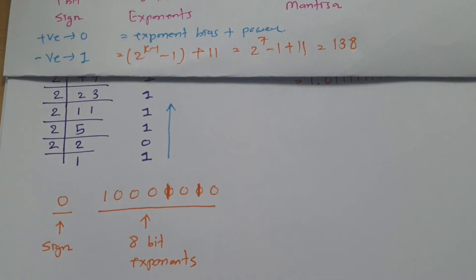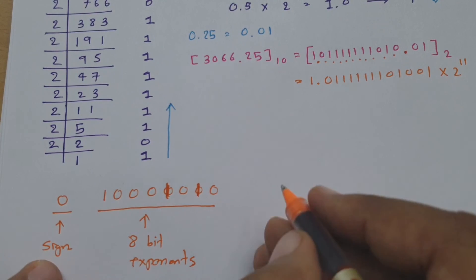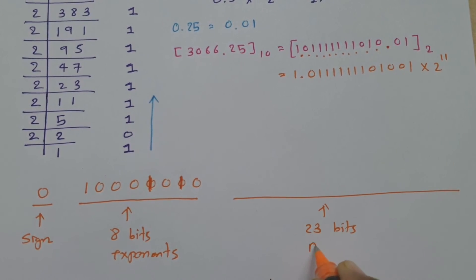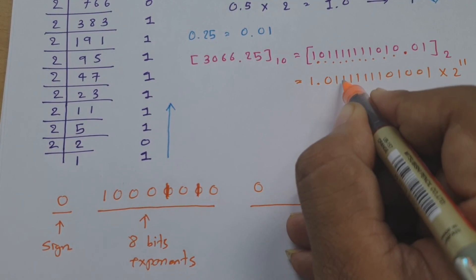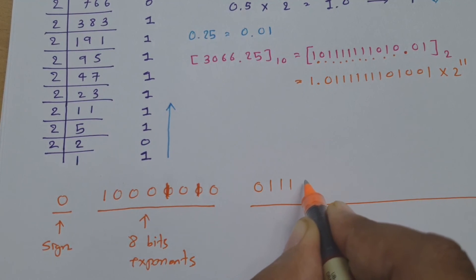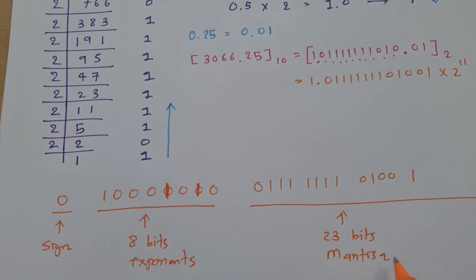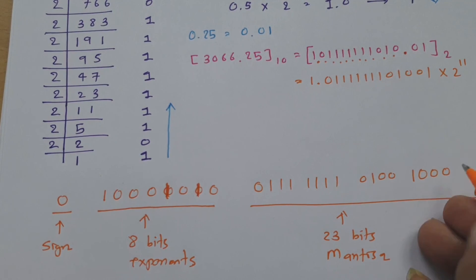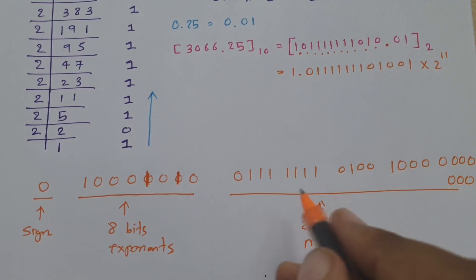The next 23 bits are the mantissa, taken from the scientific notation after the leading 1. The mantissa bits are: 0, then seven 1s, then 0, 1, 0, 0, 0, 1 — totaling 15 bits so far. The remaining bits are zero-padded to fill all 23 bits, giving three additional zeros at the end.